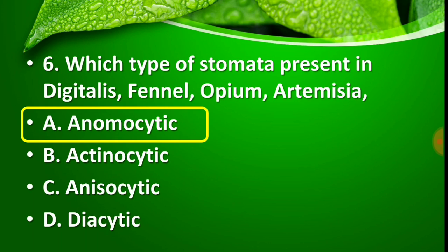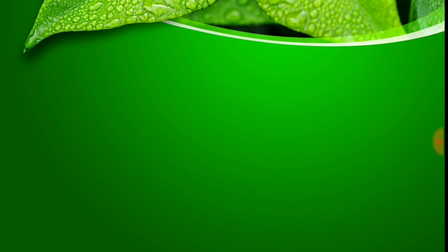To remember this, a mnemonic abbreviation was given: 'Cold B, FC, OLD, BF' — from which D stands for Digitalis, F for Fennel, and O for Opium — all matching the anomocytic stomata group. So the short form helps confirm that all these drugs have anomocytic stomata. Right answer is Option A — anomocytic stomata.